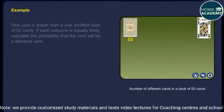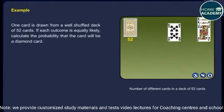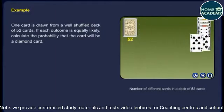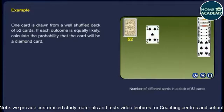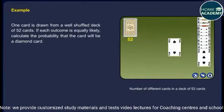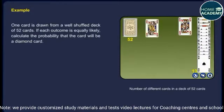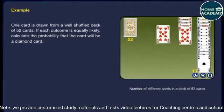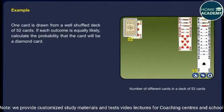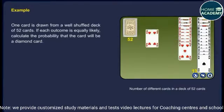Example. One card is drawn from a well-shuffled deck of 52 cards. If each outcome is equally likely, calculate the probability that the card will be a diamond card.